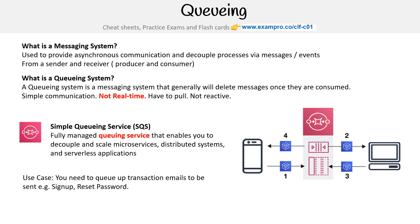A very common use case in a web application would be to queue up transactional emails to be sent, like sign-up or reset password emails. The reason we use queuing to decouple those kinds of actions is that if you had a long-running task and too many of them, it could hang your application. By decoupling them and letting a separate compute service take care of that, it becomes very useful.